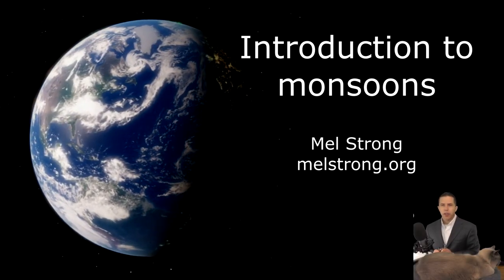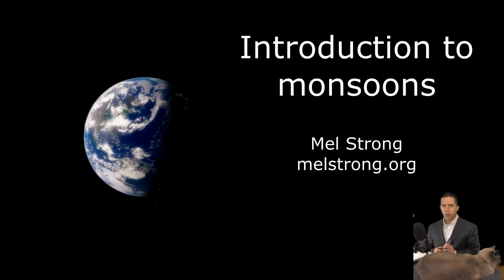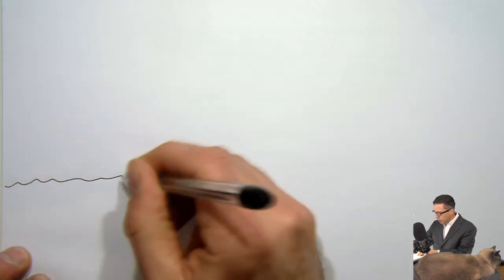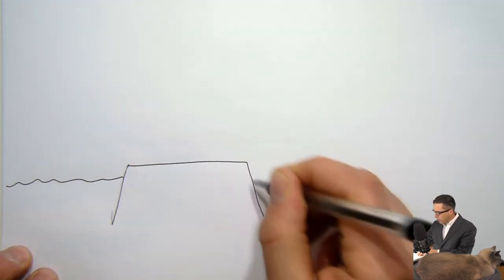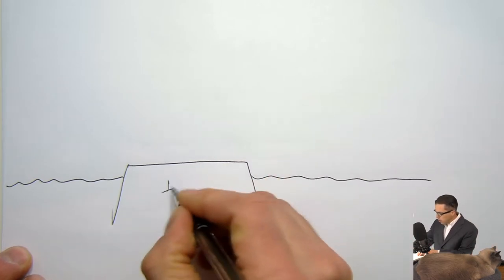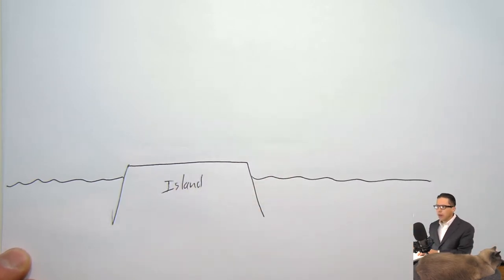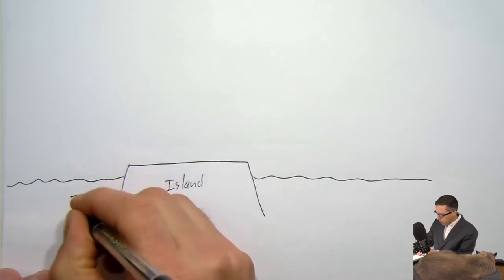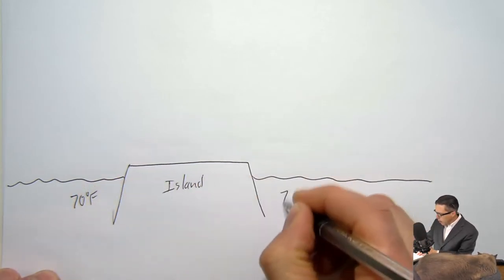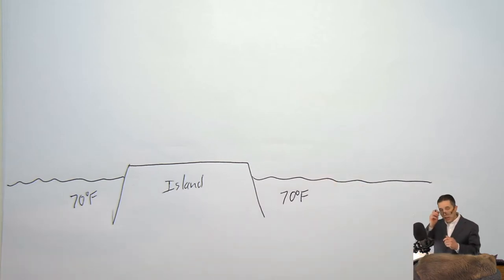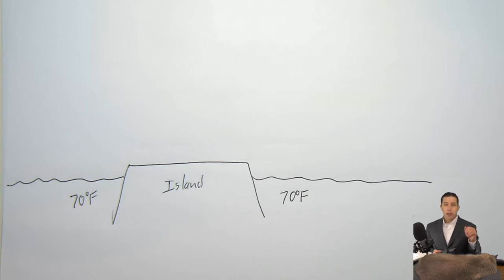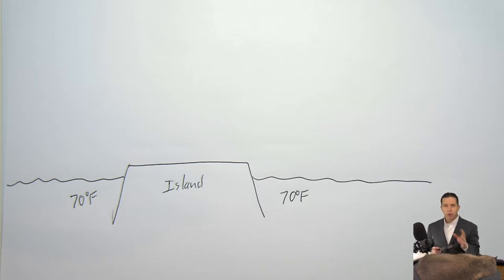I'm Mel Strong and this lecture is on monsoons. We're going to start out talking about a couple of scenarios that will lead up to monsoons. First, imagine we've got an island sitting out in the ocean, and the ocean is 17 degrees. The ocean has a very high heat capacity, which means it takes a lot of energy to warm the ocean up, and once warm it takes a long time to cool back down.